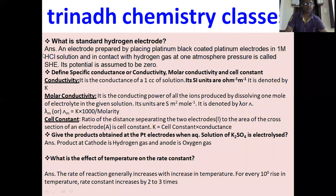What is the standard hydrogen electrode? An electrode prepared by placing platinum black coated platinum electrodes in one molar H⁺ solution and in contact with hydrogen gas at one atmosphere pressure is called the standard hydrogen electrode. Its potential is assumed to be zero.